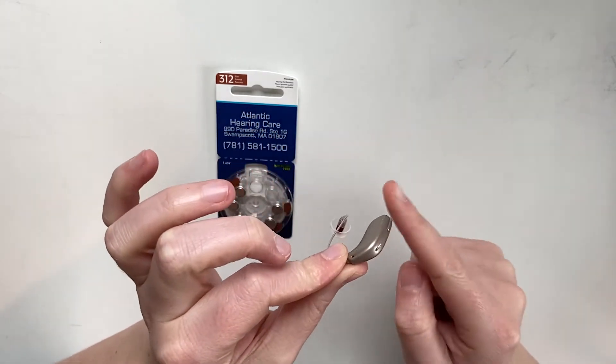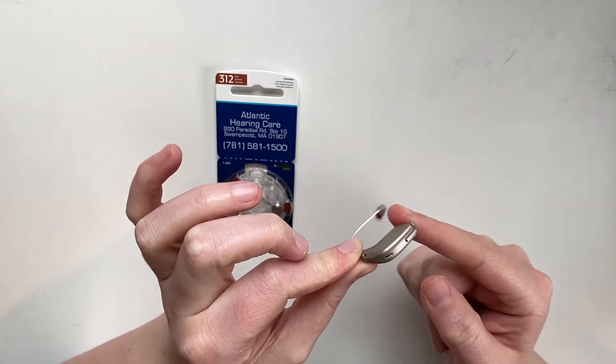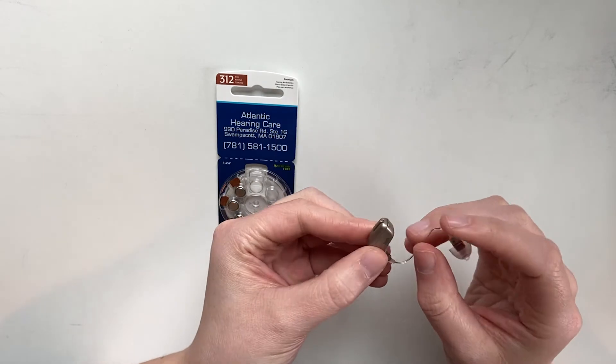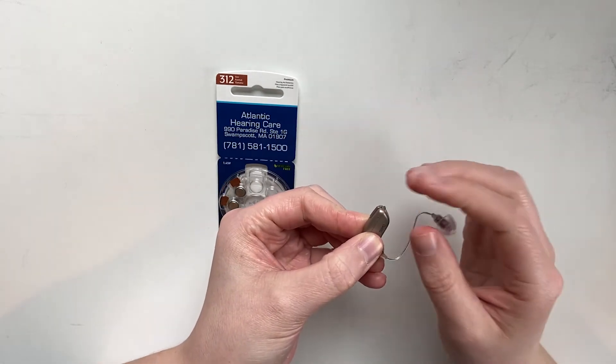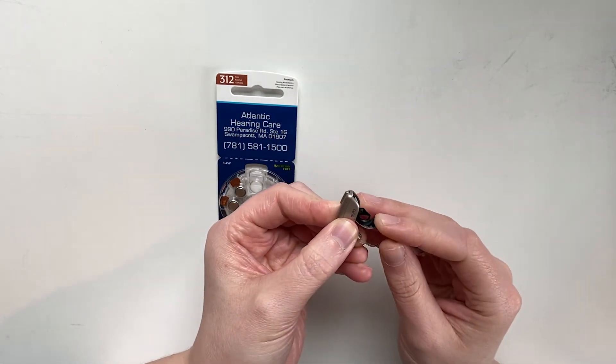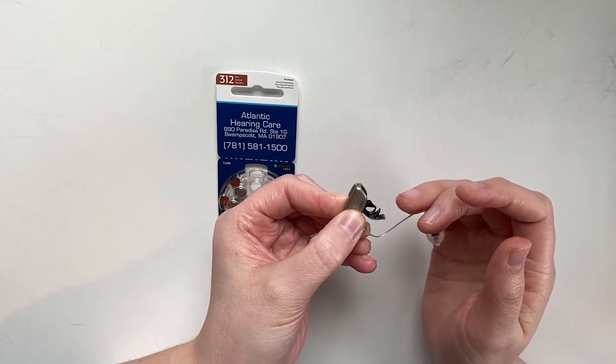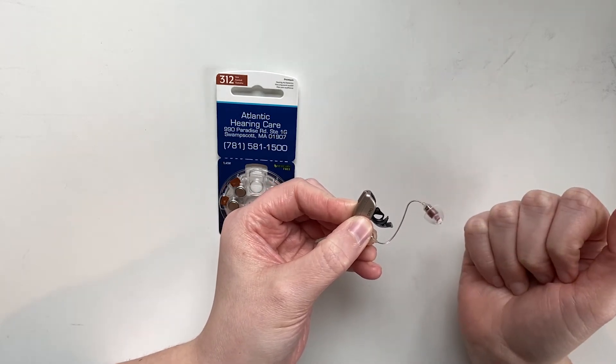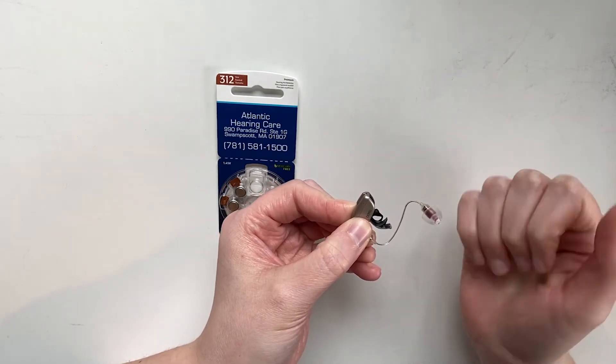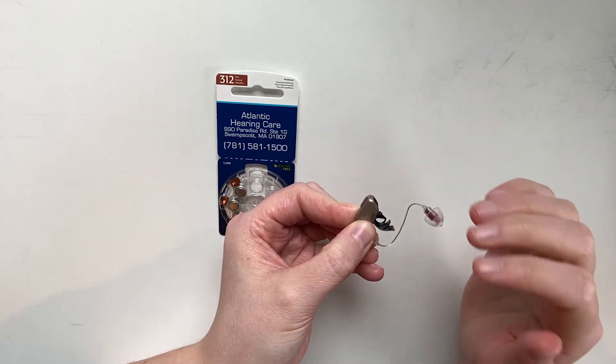We're going to look on the bottom of the piece that sits on top of our ear and there's a little pull tab here, so we're going to pull that to open up the battery door. It's normal to feel a little resistance while you're opening it, just keep pulling until you have it open.